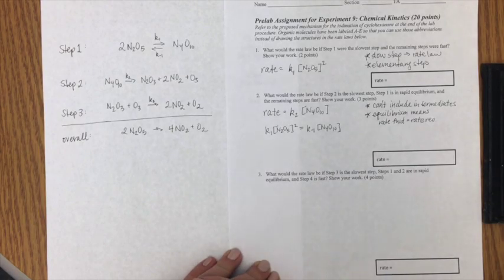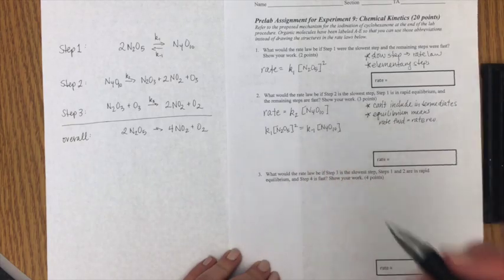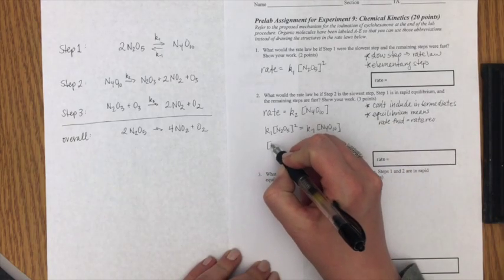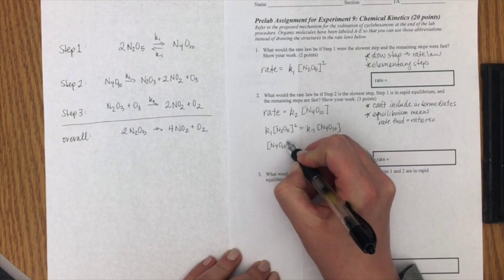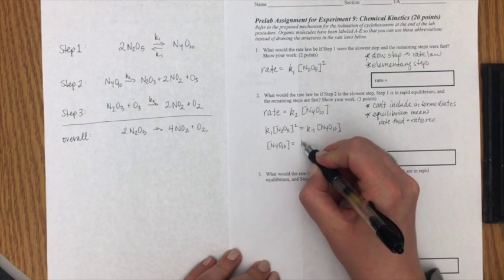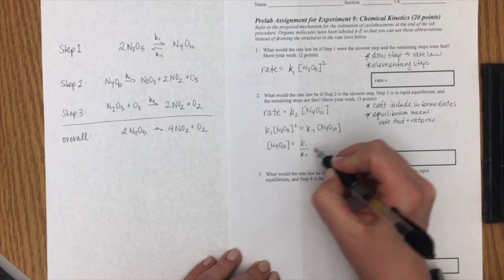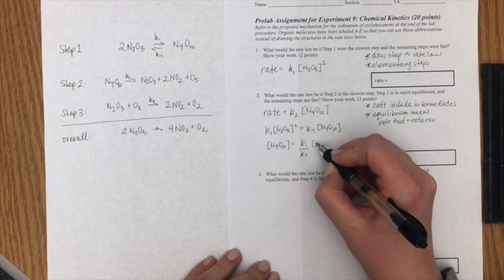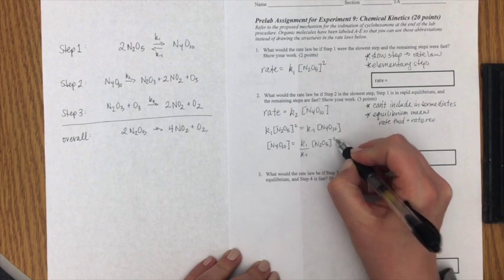Now I have this fun expression and I can solve it for N4O10 which is my intermediate. When I do that I get K1 over K-1 times N2O5 squared.